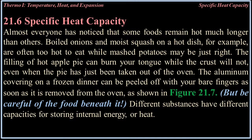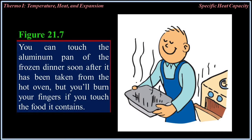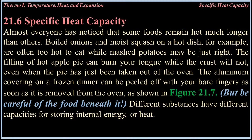21.6 Specific Heat Capacity: Almost everyone has noticed that some foods remain hot much longer than others. Boiled onions and moist squash on a hot dish are often too hot to eat while mashed potatoes may be just right. The filling of hot apple pie can burn your tongue while the crust will not, even when the pie has just been taken out of the oven. The aluminum covering on a frozen dinner can be peeled off with your bare fingers as soon as it is removed from the oven, but be careful of the food beneath it. Different substances have different capacities for storing internal energy or heat.